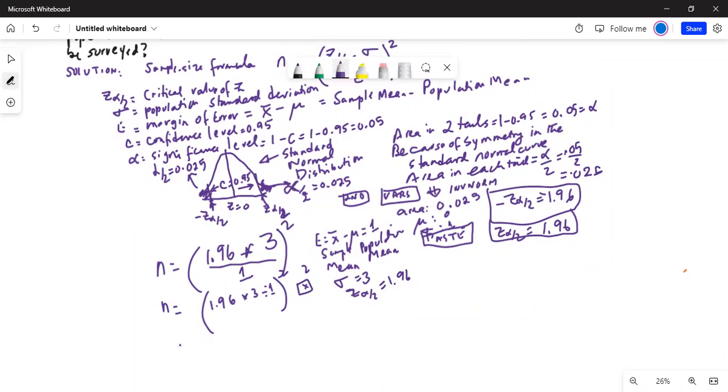N now becomes equal to left parenthesis 1.96 times 3 divided by 1, right parenthesis, then press the x square button to get exponent 2. Hit enter. The answer comes out as 34.57, but we round it always to the next higher number, so the minimum sample size necessary is 35.